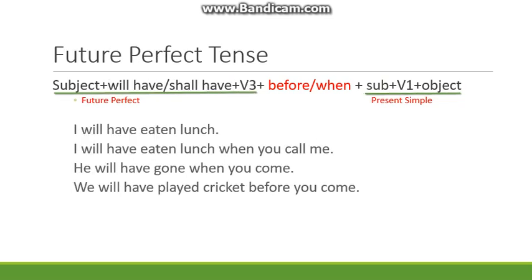Past perfect: subject plus 'had' plus third form of verb, plus 'before' or 'when', plus past simple. Future perfect tense is very similar: subject plus 'will have' or 'shall have' plus third form of verb. In past perfect, you use 'had' plus before/when plus past simple, but in future perfect you use 'will have' plus present simple.